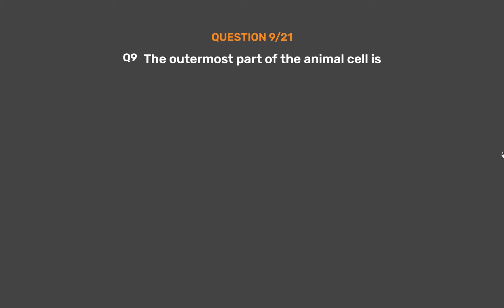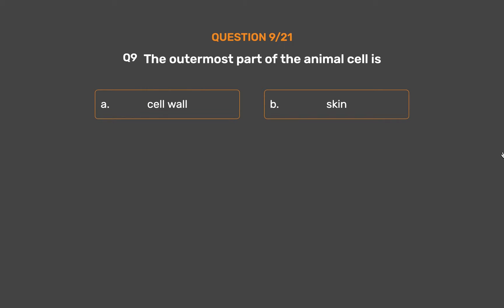Question No. 9: The outermost part of the animal cell is. Option A: Cell wall. Option B: Skin. Option C: Cell membrane. Option D: Nucleus.